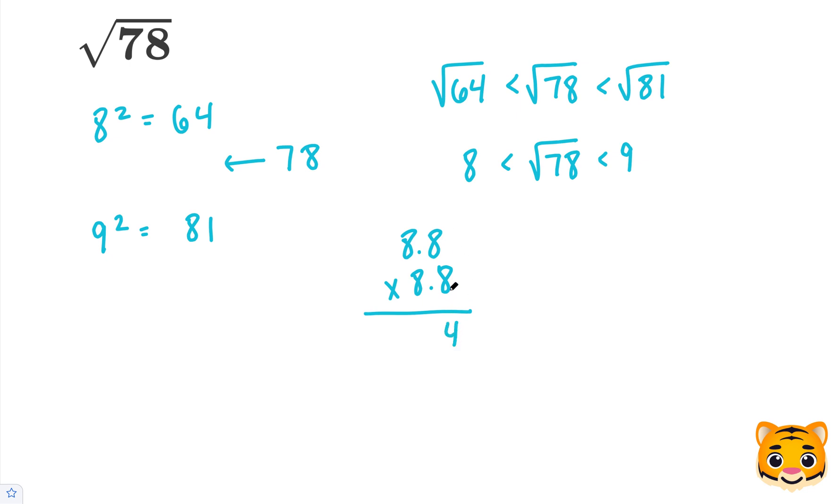8 times 8 is 64, carry the 6. 8 times 8 again is 64 plus 6 is 70. Now add a 0 and repeat that and we'll have 77.44 as our answer, which is very close to 78.